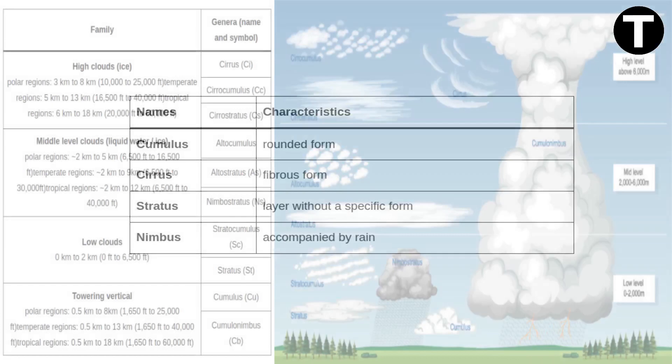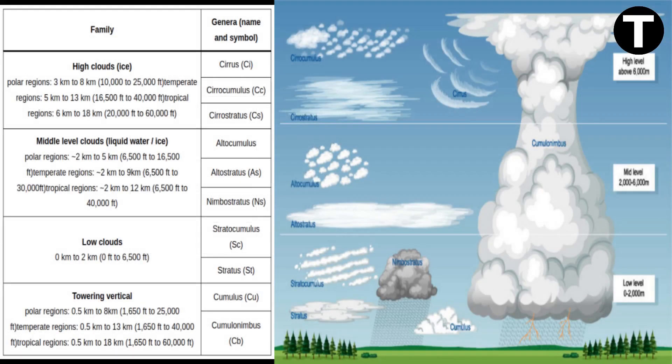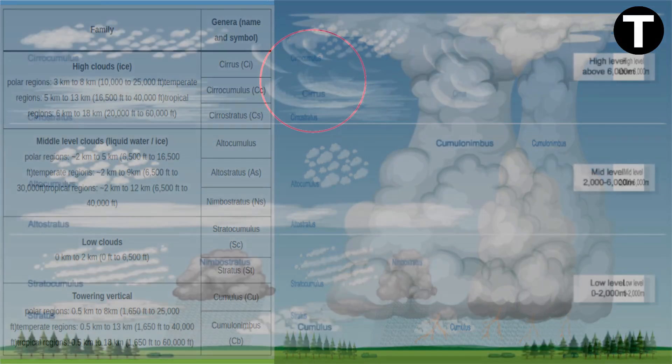Now let's explore the ten basic cloud types, grouped into four families. From the high-flying cirrus clouds to the majestic cumulonimbus clouds, each has its own story to tell.